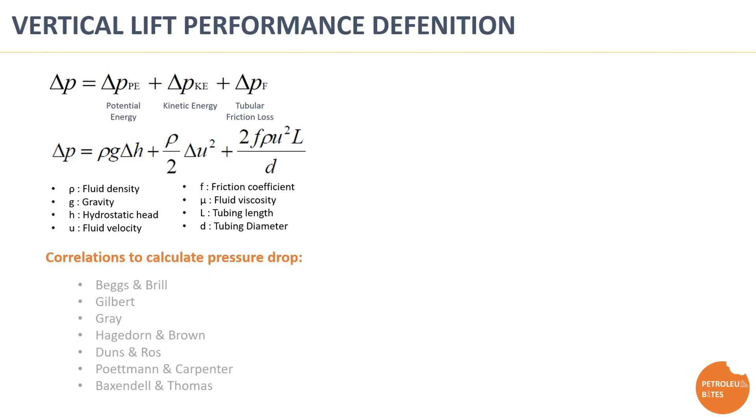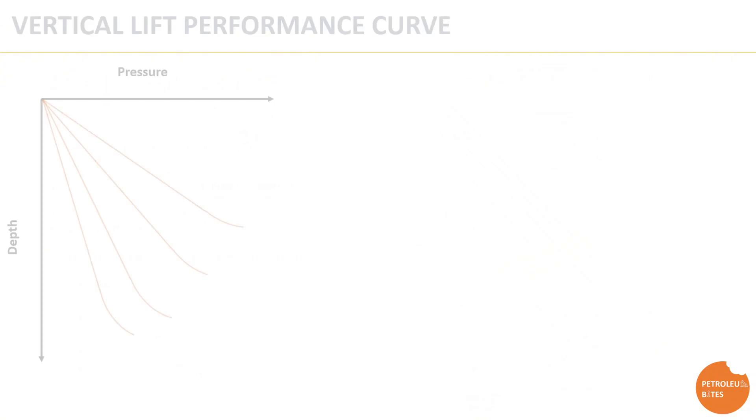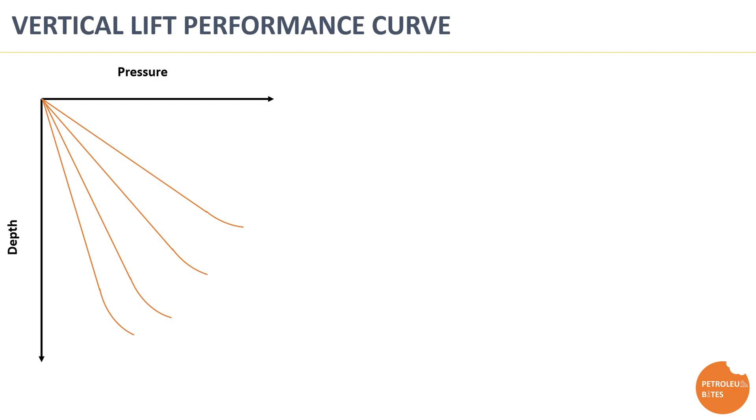There are many correlations that are used to estimate bottom hole flowing pressure at a certain production rate, fluid property, and gas-liquid ratio. Here is an example of how to use VLP correlation.